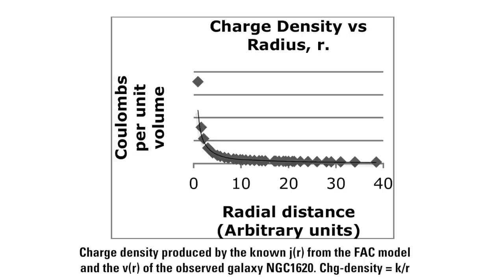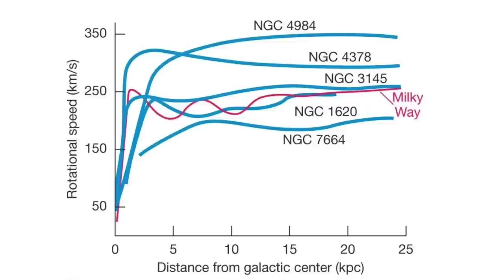But is there any evidence that this particular distribution, this one over r shape, is the way charge really is distributed inside an actual BC? I took a short side trip off the logical journey we had been on to find that out. Did the velocity profiles of other galaxies also require this same charge density in the BCs they connected with?